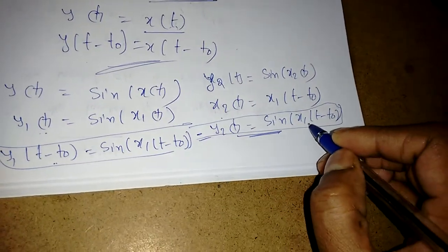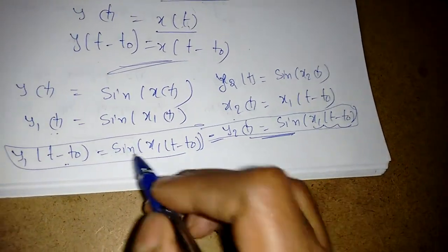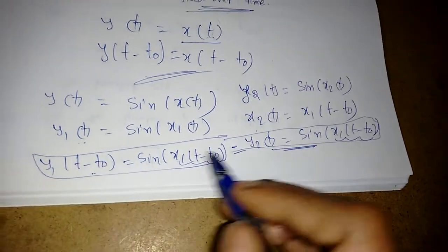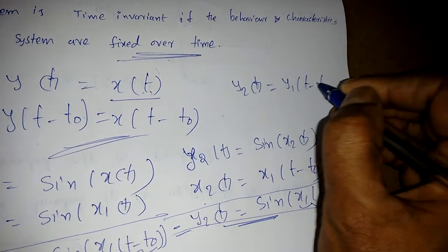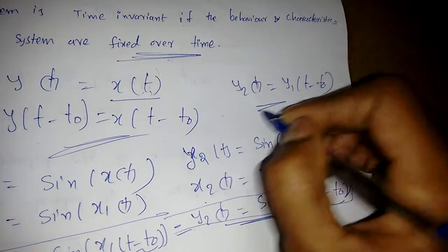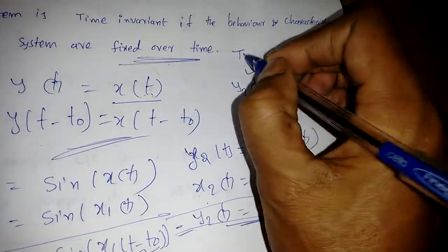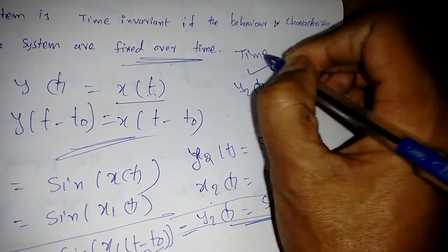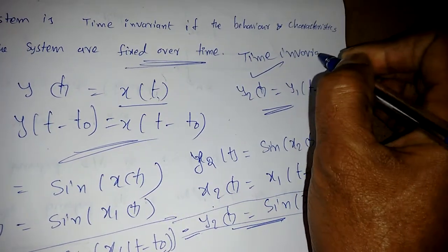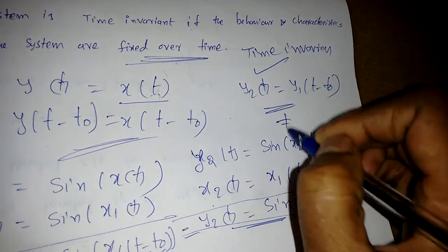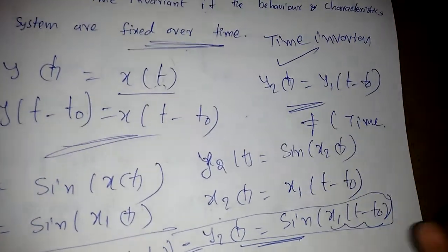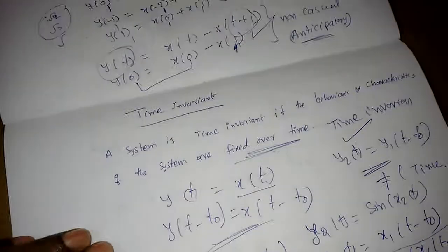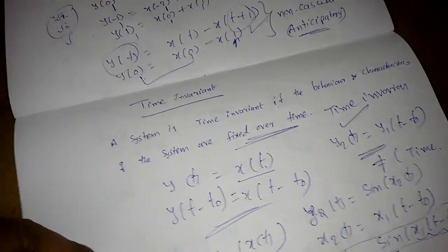We are getting the same values: x1(t - t_naught) on both sides. Whenever y2(t) = y1(t - t_naught), the system is time invariant. Whenever these two are not equal, it is called time variant — meaning the output varies with time. We will see one more example.